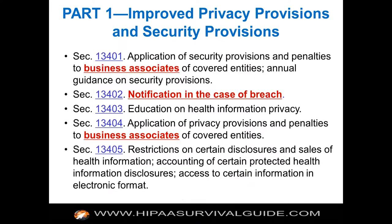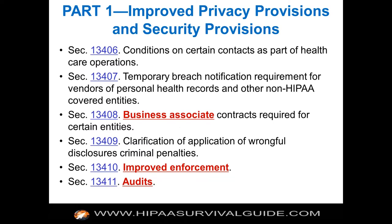All of this came into being as part of the HITECH Act. There was no such thing as direct business associate compliance prior to the HITECH Act. Reading the overview sections, you can see business associates referenced almost everywhere — in sections 13401 and 13402, notification in case of breaches, application of privacy provisions. A large part of the HITECH Act was directed towards business associates, including now improved enforcement and audits. Business associates are going to be audited just like covered entities.